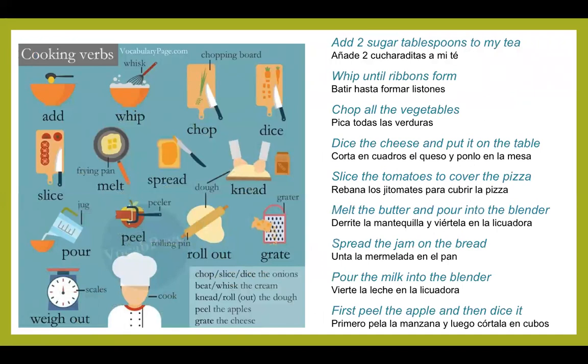Let's look at some examples of the vocabulary in real sentences. Add two sugar tablespoons to my tea — add, añadir. Whip until ribbons form — whip, batir. Chop all the vegetables — chop, picar. Dice the cheese and put it on the table — dice, cortar en cuadros. Slice the tomatoes to cover the pizza — slice, rebanar. Melt the butter and pour it into the blender — melt, derretir; pour, vertir. Spread the jam on the bread — spread, untar. Pour the milk into the blender — pour, vertir.